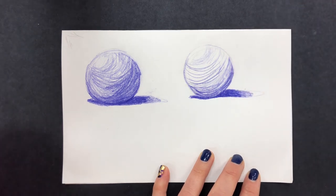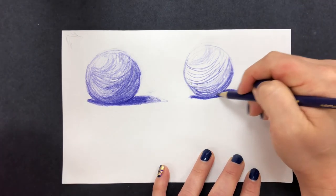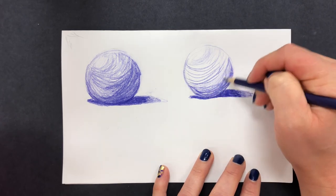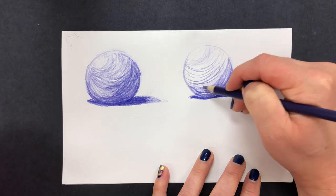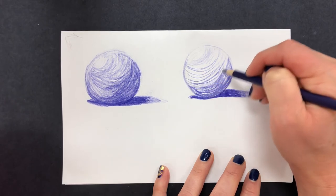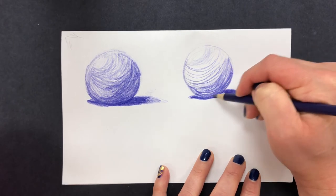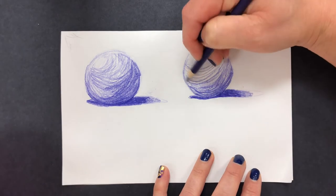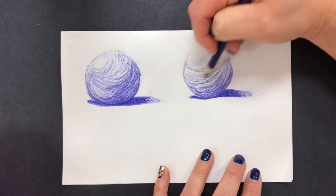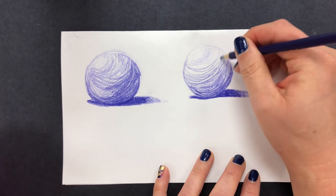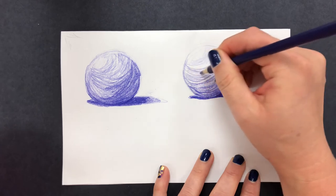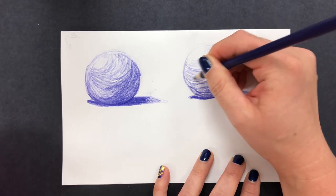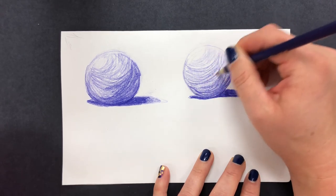All right so I'm pretty happy with my shadow there so I'm going to keep going back and add some more core shadow to the sphere. Notice the way I'm making my pencil move, I'm matching the rounded shape of the object.